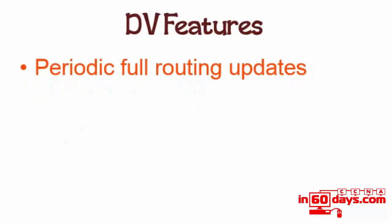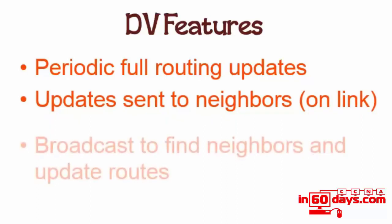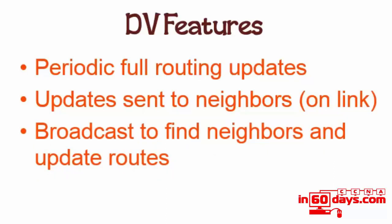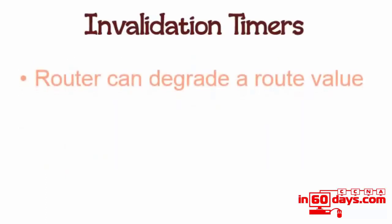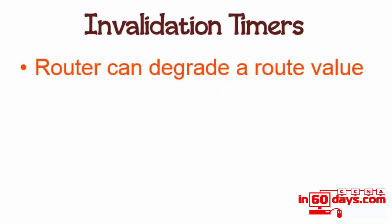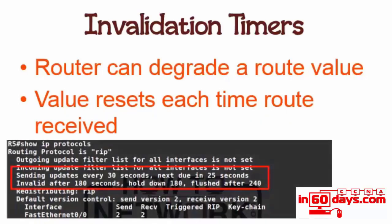Features of distance vector: periodic routing updates are sent to neighbours on the link. Broadcasts are used to find neighbours and update routes. You can see RIP configured here in 'show IP protocols' - it sends updates every 30 seconds and it's running a timer so it knows the next one is due in 8 seconds time. Invalidation timers: a router can actually degrade the value of a route, and the value resets each time an update is received. For RIP, the invalid timer - the route becomes invalid after 180 seconds if no update is received.